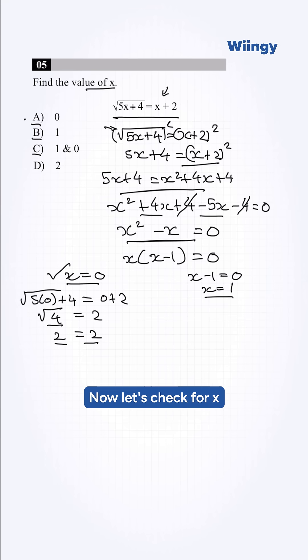Now let's check for x is equal to 1. Substituting in our equation, it will become root 5 into 1 plus 4 equal to 1 plus 2. This will be root of 5 plus 4 equal to 3. 5 plus 4 is 9, root 9 is equal to 3. Root 9 is basically 3 is equal to 3. LHS is equal to RHS.